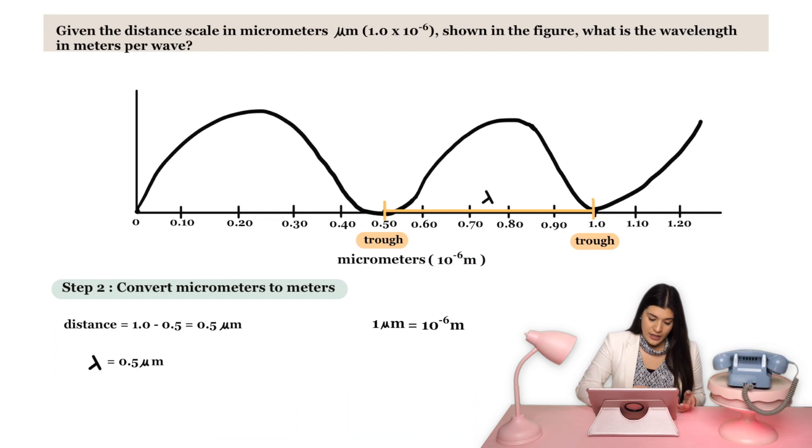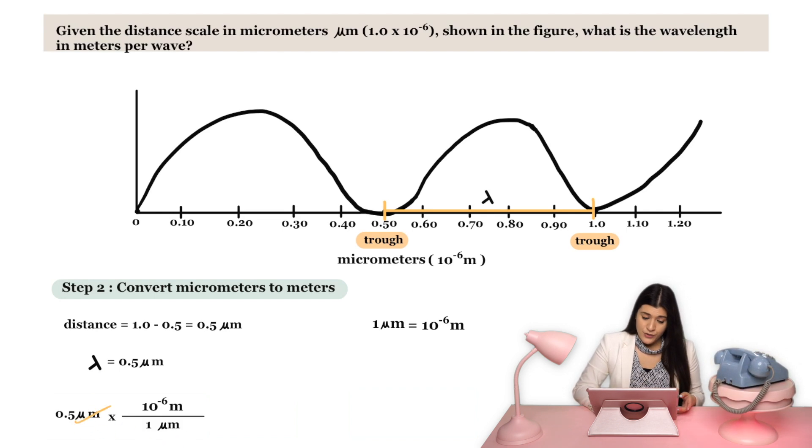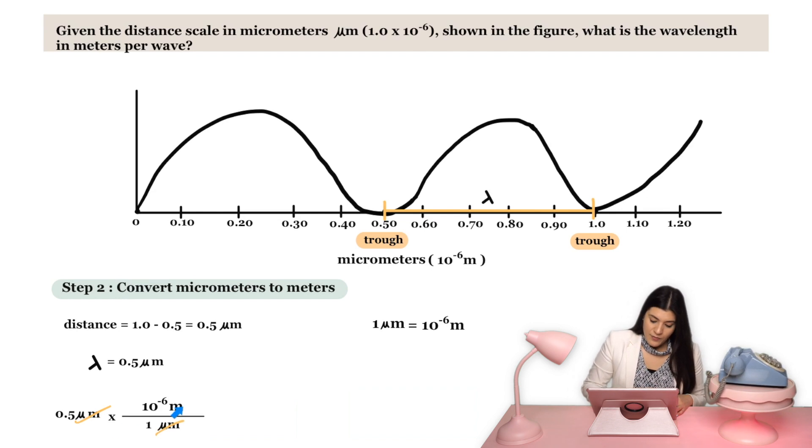What I'm going to do is just set this up. So we found the wavelength in micrometers. I'll convert this to meters, aligning our micrometers across from each other so they can cancel. And then we will be left with meters on top.